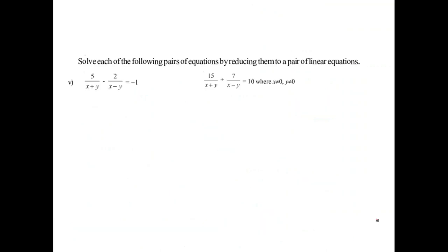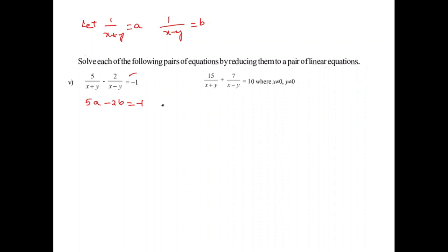For the next sum, I assume 1 by x plus y equals A and 1 by x minus y equals B. This equation reduces to 5A minus 2B equals minus 1 (equation 1). Similarly, the second equation becomes 15A plus 7B equals 10 (equation 2).